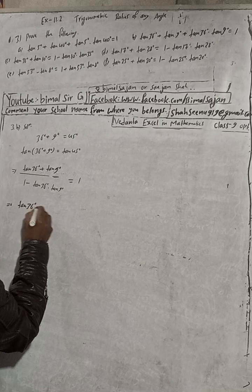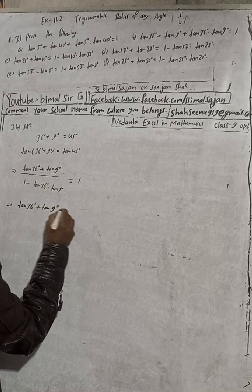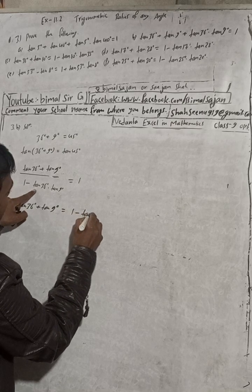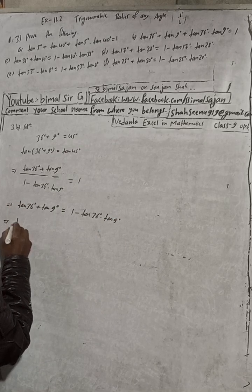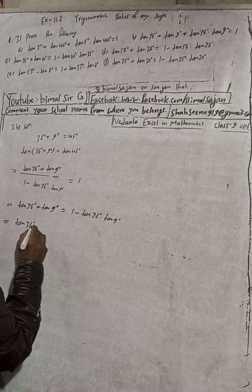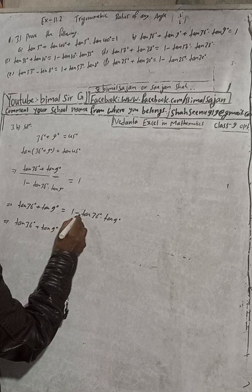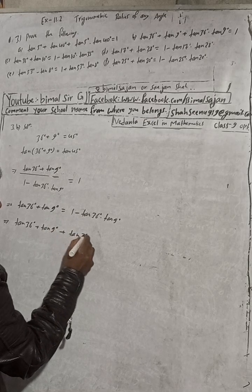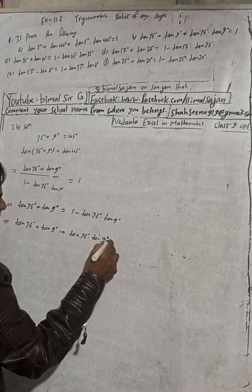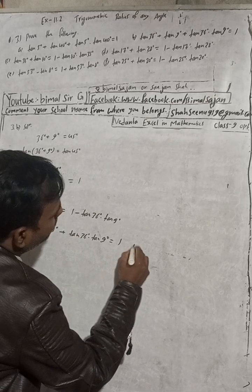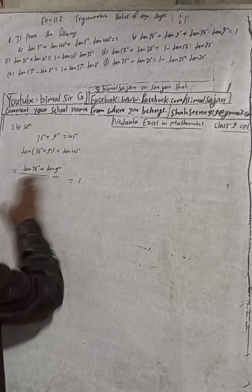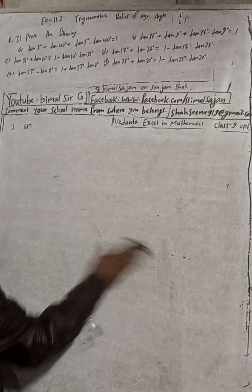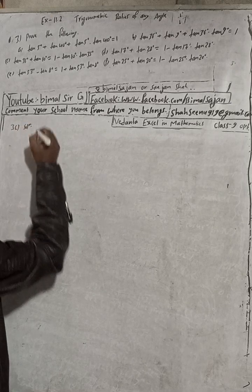Cross multiplying: tan36° + tan9° = 1 × (1 − tan36°·tan9°). Rearranging: tan36° + tan9° + tan36°·tan9° = 1. This is what we had to prove — proved.